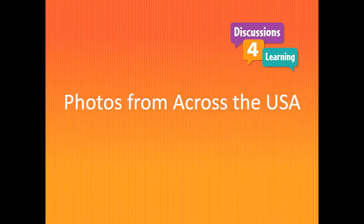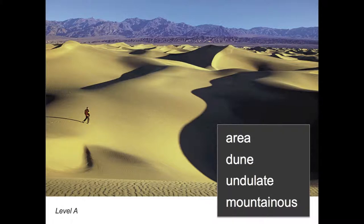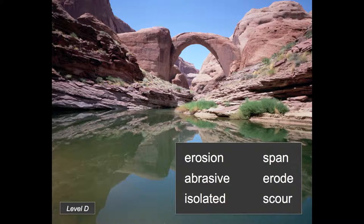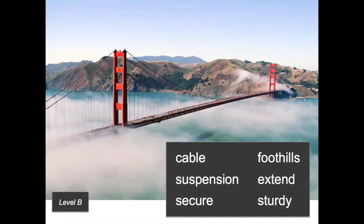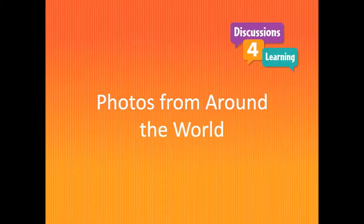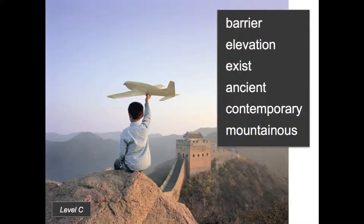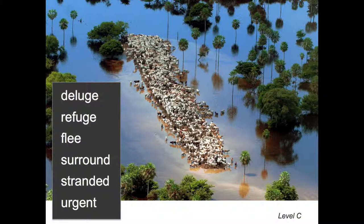The real-world photos include iconic images from across the USA, including this image from Death Valley, California — great for discussing the undulating sand dunes. This natural Rainbow Bridge National Monument in Utah provides a springboard for discussing erosion. And the Golden Gate Bridge in San Francisco, California. The real-world photos include dramatic images from around the world, such as this image of the Great Wall of China, as students discuss this contemporary image of a boy on an ancient structure. And cattle stranded on a strip in the Amazon in Bolivia following a deluge of rain.